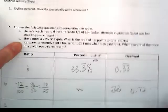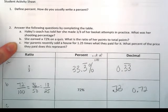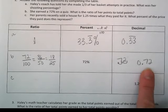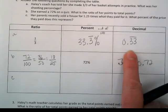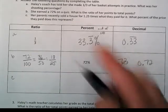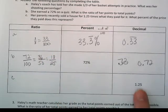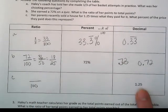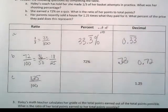Now, this one's a little bit more confusing. Her parents recently sold a house for 1.25 times what they paid for it. What percent of the price they paid does this represent? Well, if I look at this decimal, 72 hundredths is written as 72 over 100. 0.33 repeating is also equivalent to 33 over 100. So if we're writing my ratio, I can just simply write this as something over 100. This one happens to be over 100%, so it's going to be 125 over 100.